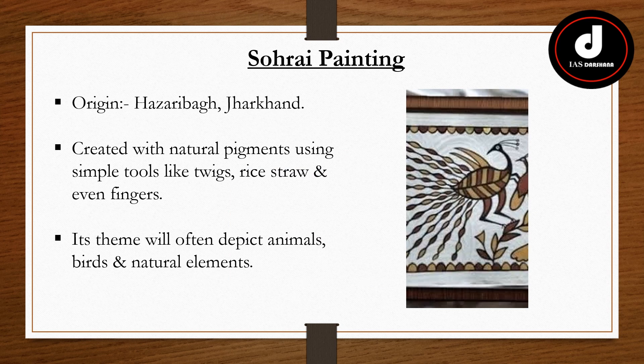Let us tell you about the Sohrae painting's origin, themes, techniques and tools. Starting with origin: it is indigenous to Hazaribagh, Jharkhand, and recognized under the ODOP — One District, One Product — initiative. The techniques and tools: it is created with natural pigments using simple tools like twigs, rice straws and even fingers. The themes often depict animals, birds and natural elements, symbolizing the agrarian lifestyle and reverence for wildlife in tribal cultures. As you can see in this painting, a bird has been painted.